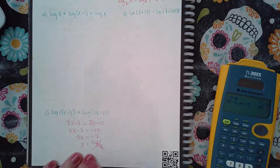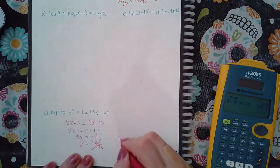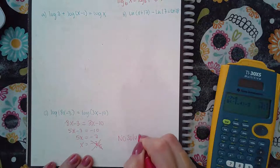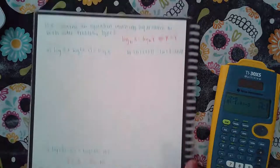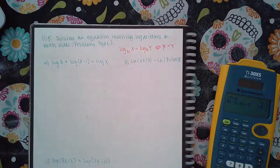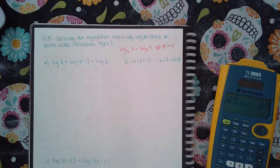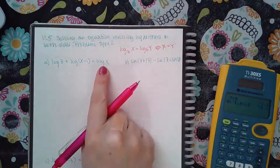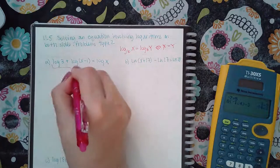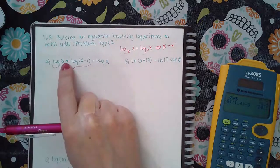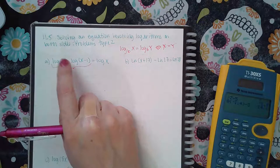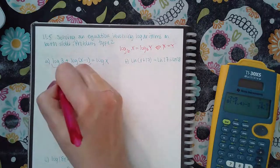Which means it's not a solution, and since it's the only one I found when it was bad, the answer to this problem is there's no solution. Now over here though, I don't have just one log equal to one log. I have one log on the right-hand side, but on the left-hand side I'm going to have to convert that so that it is just one log.